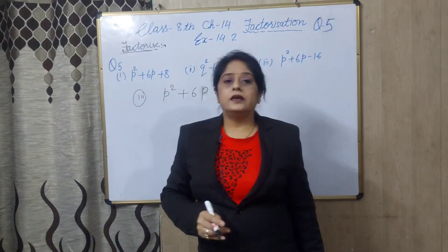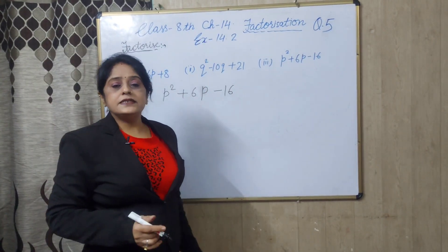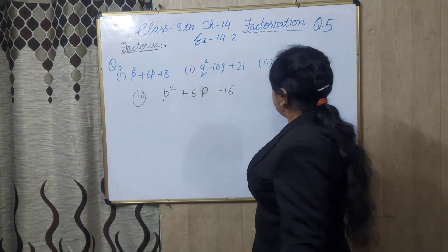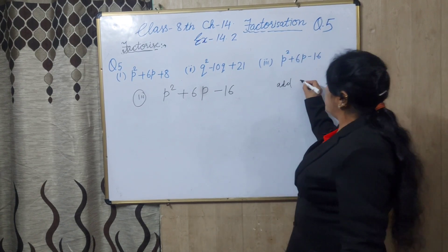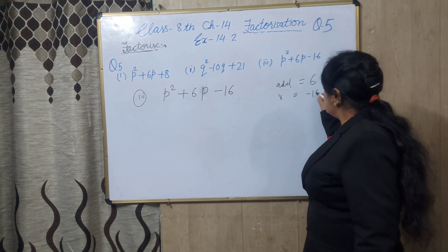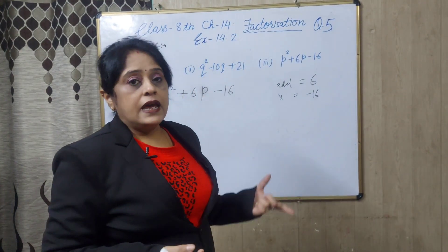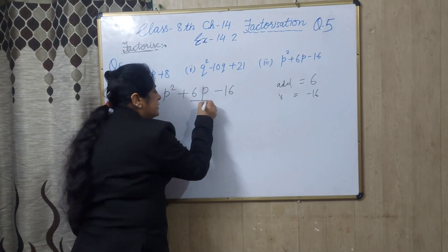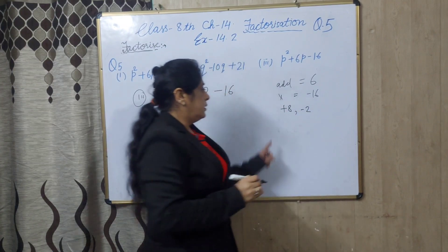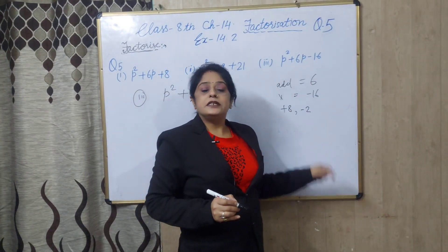Now the third part: p squared plus 6p minus 16. You have to think of two numbers such that when added they give 6, and when multiplied they give minus 16. The answer is plus 8 and minus 2. You can check: 8 plus minus 2 equals 6, and 8 multiplied by minus 2 equals minus 16.